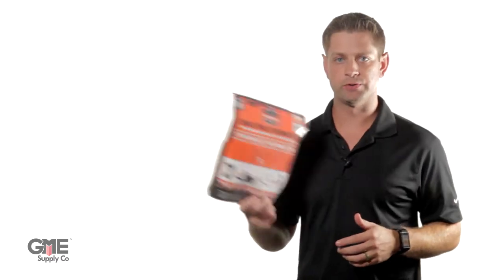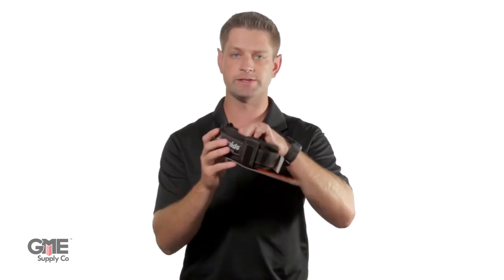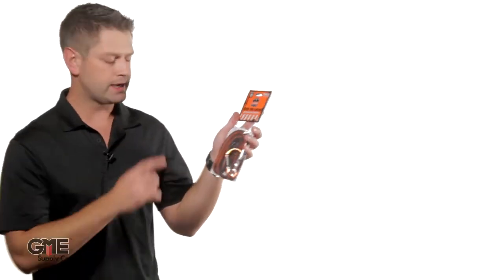First up is the 3191 power tool tether kit. The kit includes the power tool trap which is designed to harness the battery pack on most drills and power tools, as well as a 3100 FX tool lanyard.